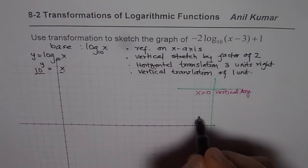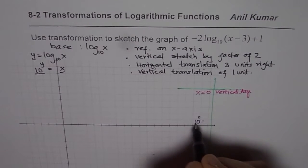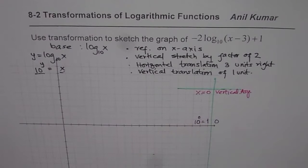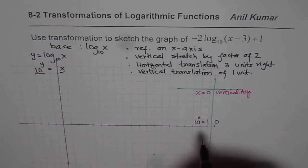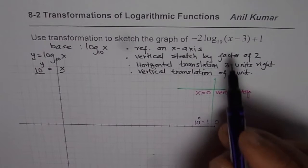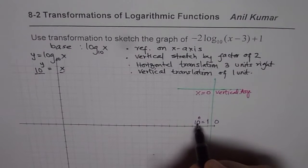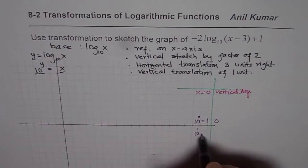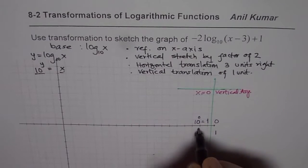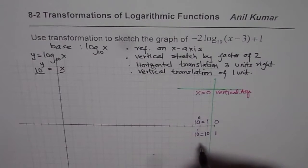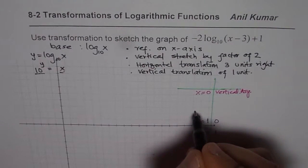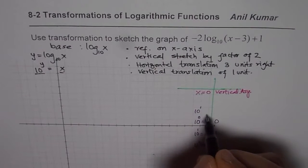10 to the power of 0 — anything to the power of 0 is 1, so the y value is 0. That is how you calculate the points. 10 to the power of 1 means x is 10 and y value is 1. 10 to the power of 2 is 100, so y value is 2. That is the key to choosing x values.